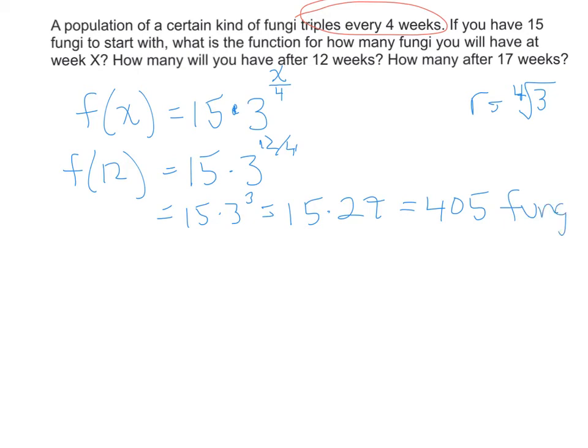So the equation here is going to get us that. So what we then want is f of 12, and that's going to be 15 times 3 to the 12 fourths, and of course 12 fourths is 3. And so that means we're going to wind up tripling three times. So this is going to give us 15 times 3 to the third, and that's 15 times 27, which, if I did the calculation correctly, is 405 fungi. And if we answer the last question, f of 17, and this is where it's convenient. We're allowed to put f of 17 in. That's going to be 15 times 3 to the 17 over 4, which, of course, then is 15 times 3 to the 4 and a quarter, because it's four and one-fourth set of four weeks.